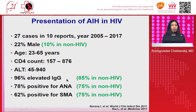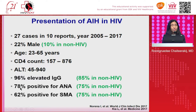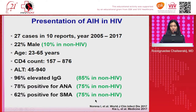Regarding IgG elevation, most patients had elevation of IgG — 96% — which is much higher than in non-HIV patients. ANA was present in about 78% of patients with HIV, comparable to non-HIV patients. For smooth muscle antibody, it was present in about 60% of patients, which is lower than the non-HIV AIH patient.